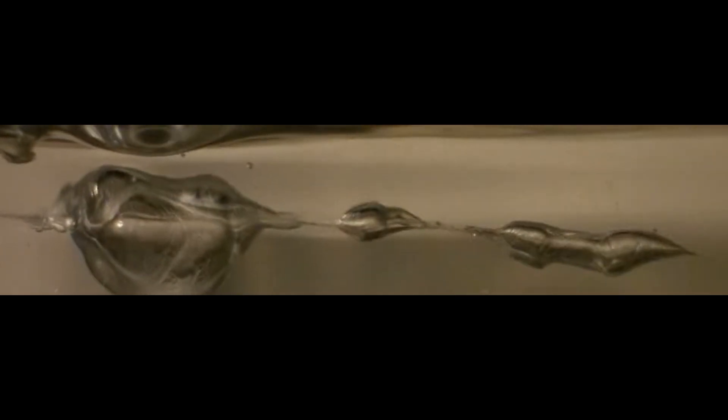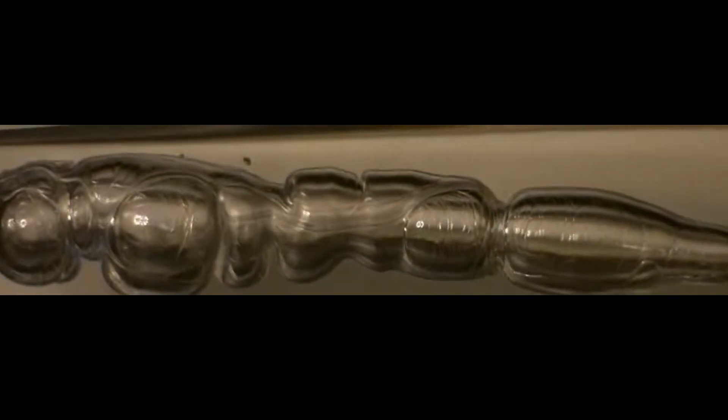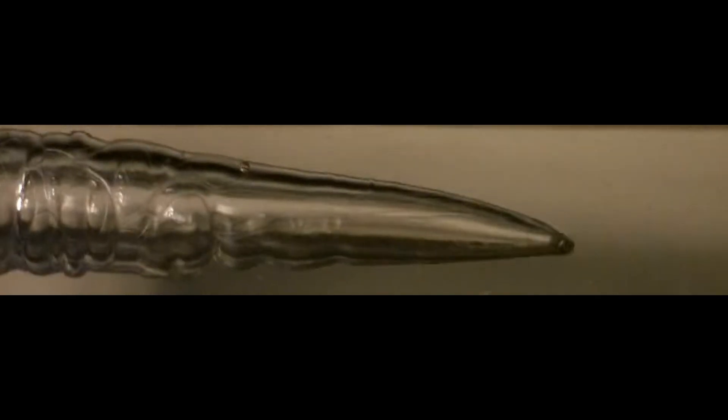As the bubble collapses, the gas inside is compressed to extremely high pressures and temperatures. Scientists estimate that the temperature inside the collapsing bubble may reach tens of thousands of degrees, comparable to or even hotter than the surface of the sun. The collapse happens so fast that the gas doesn't have time to escape, causing the bubble to implode violently. During this implosion, the energy from the collapse is focused into an incredibly small volume. This concentrated energy leads to the emission of a bright flash of light, lasting for just a few trillionths of a second.